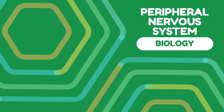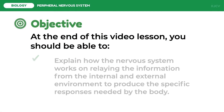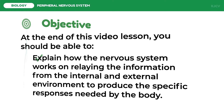In this lesson we are going to discuss the peripheral nervous system. At the end of this video lesson you should be able to explain how the nervous system works on processing the information from the internal and external environment to produce the specific responses needed by the body. Information is relayed throughout the body by the nerve cells or neurons.